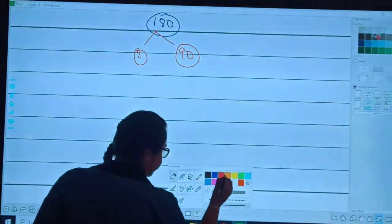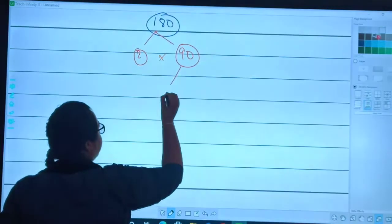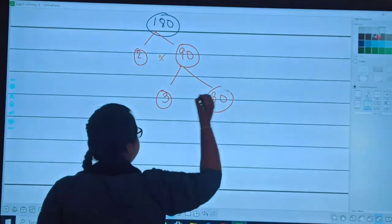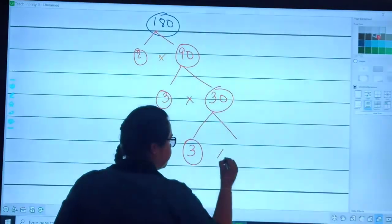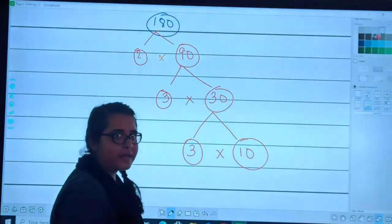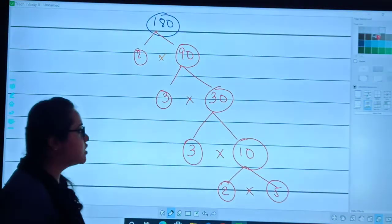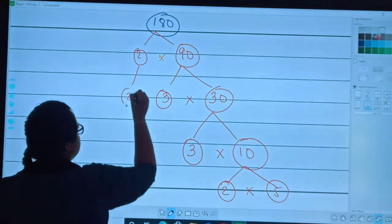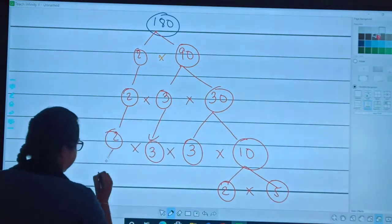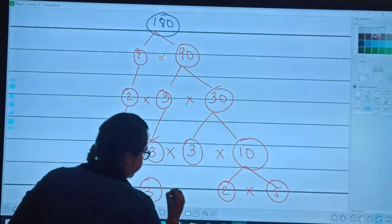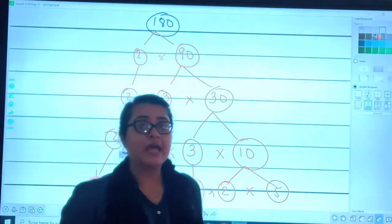Now I will divide this 180 into two numbers, that is 2, 90. Then this 90, I can split this 90 into 3, 30. I can split this 30 into 3, 10.